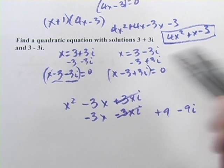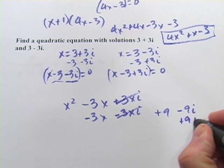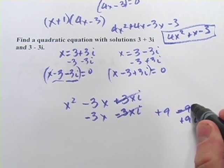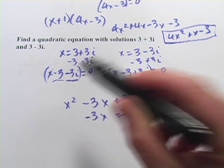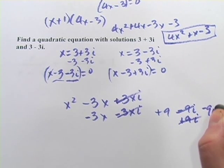Now, negative 3i times negative 3 is a positive 9i. Aha, those two add up to 0. We can get rid of those. And finally, negative 3i times 3i is negative 9i squared.